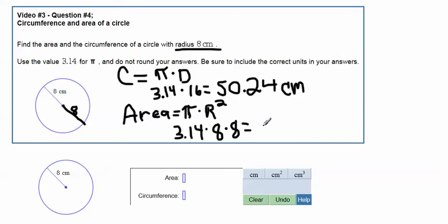Then when we're asked to label this one correctly, we need to make it square centimeters, because remember, area is two-dimensional. So when we multiply this, we get 200.96 square centimeters.